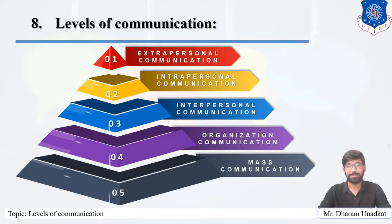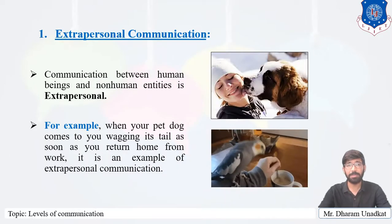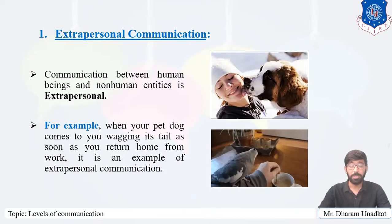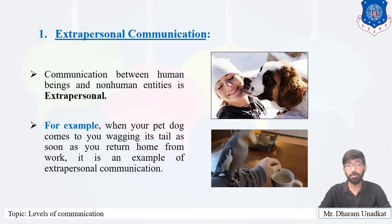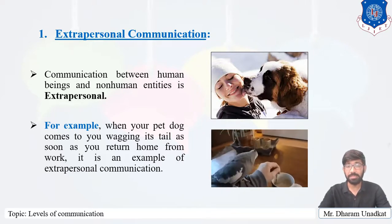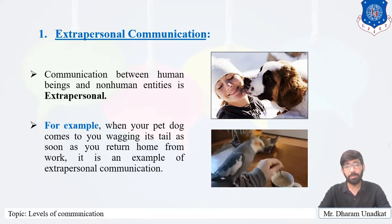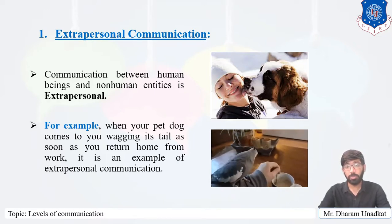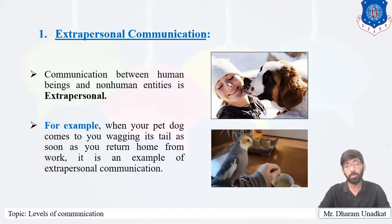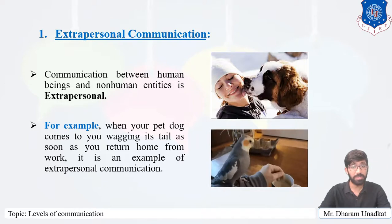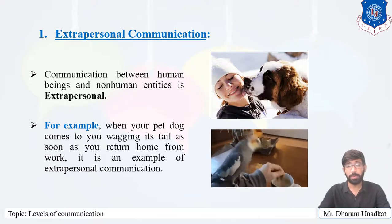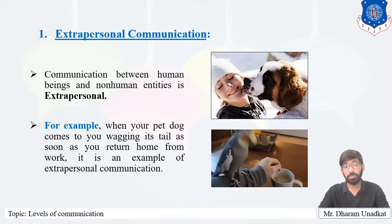The first level is extra-personal communication. Communication between human beings and non-human entities is called extra-personal communication. For example, when your pet dog comes to you wagging its tail as soon as you return home from work, that is an example of extra-personal communication. Another example is a parrot responding to your greeting.